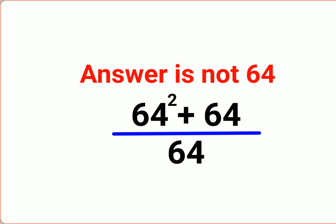So we have 64 square plus 64 upon 64. Now please understand a square can be written as a into a. So similarly 64 square can be written as 64 into 64.